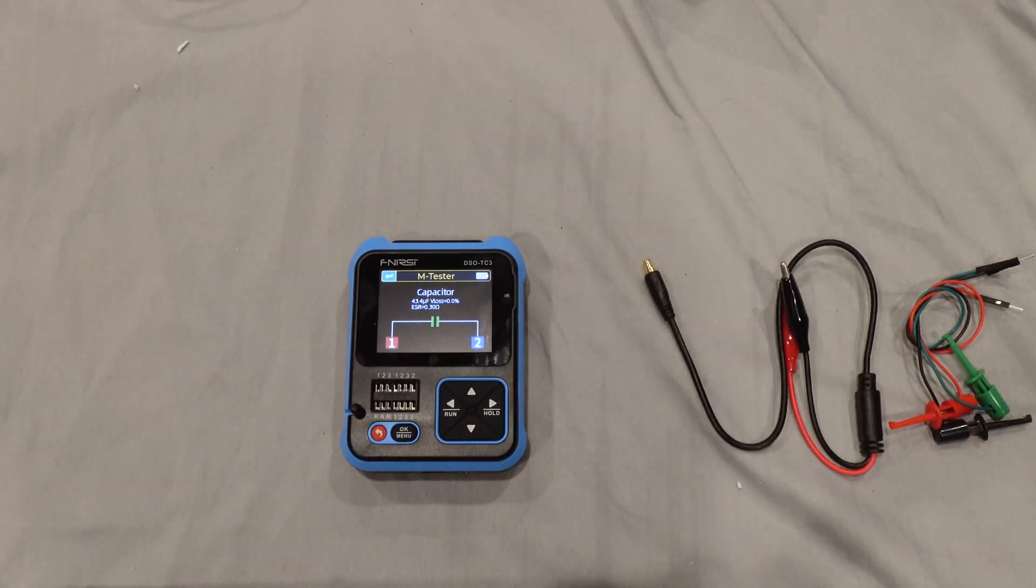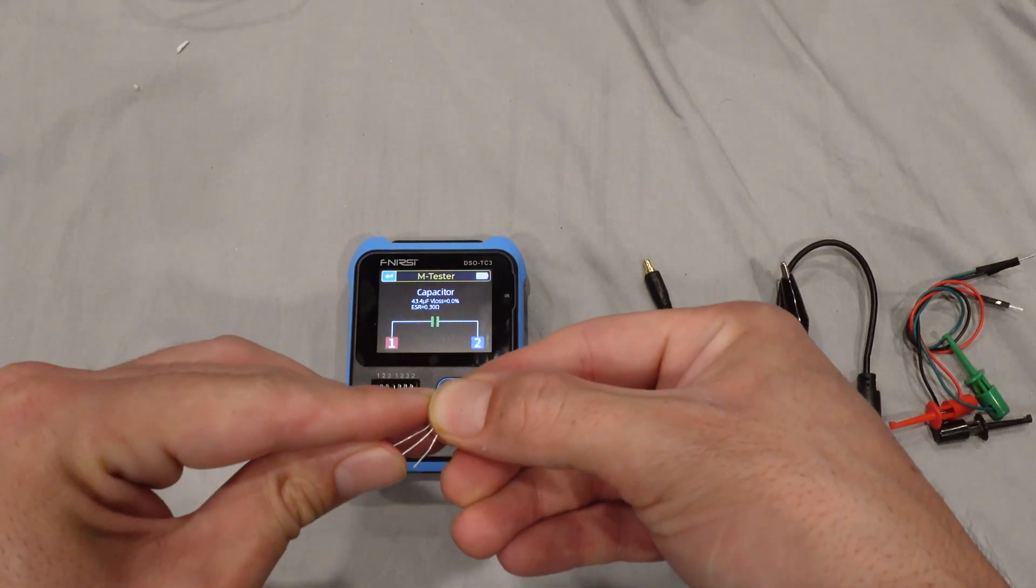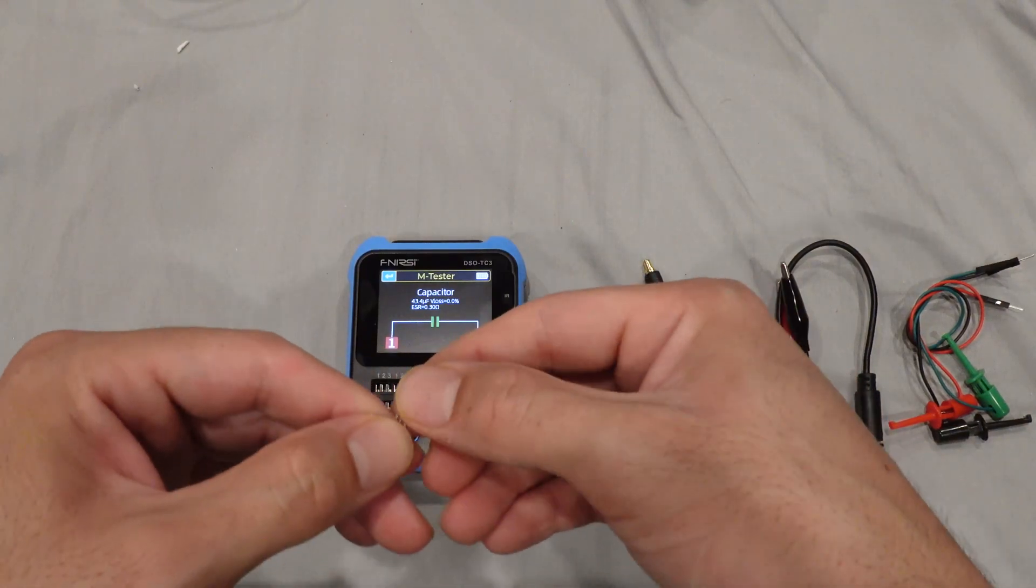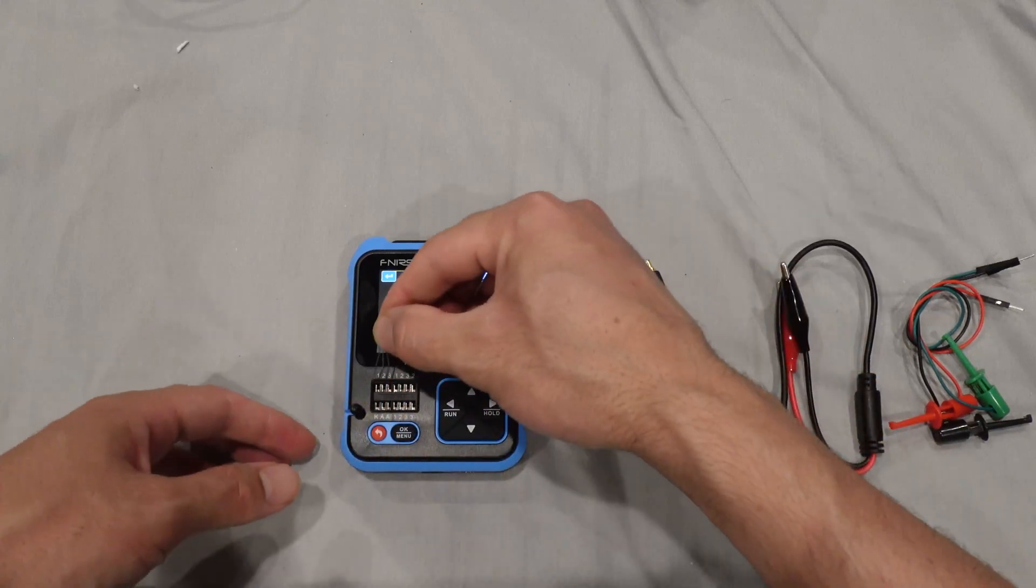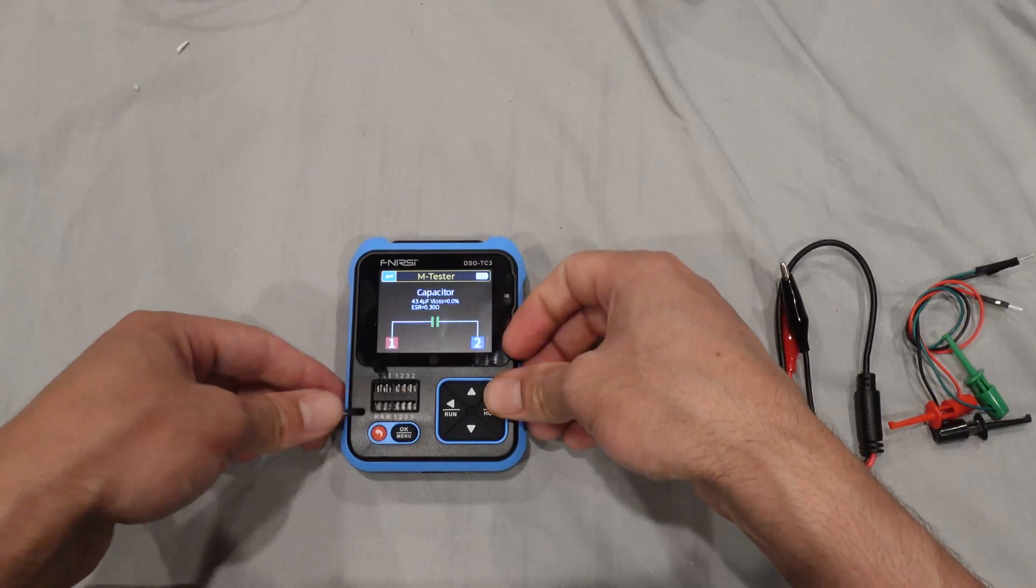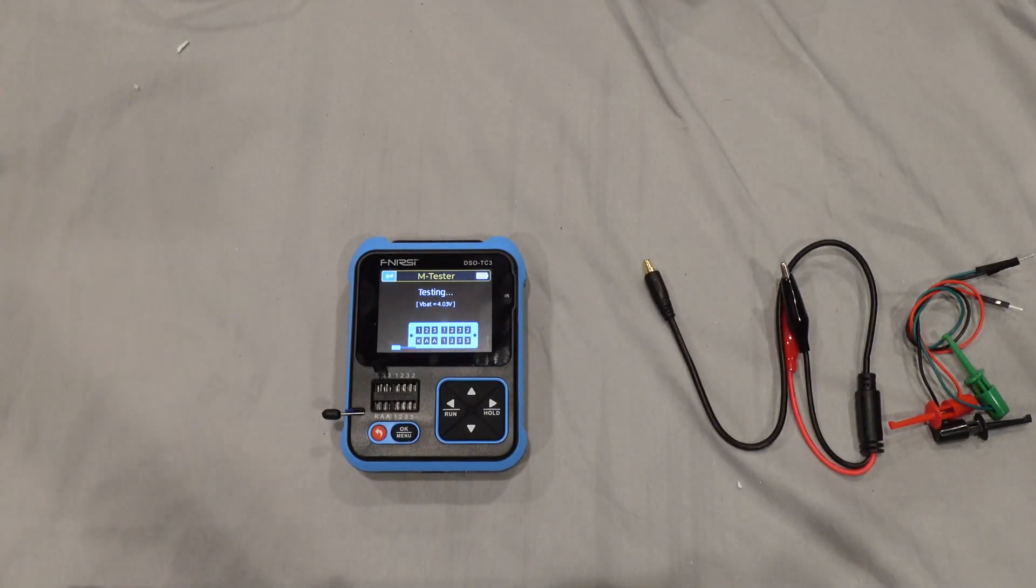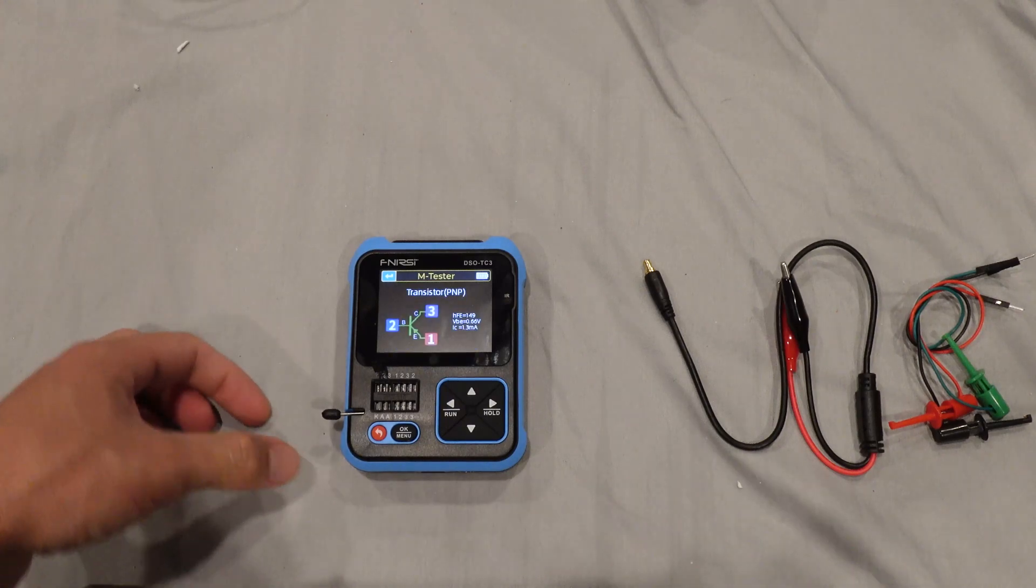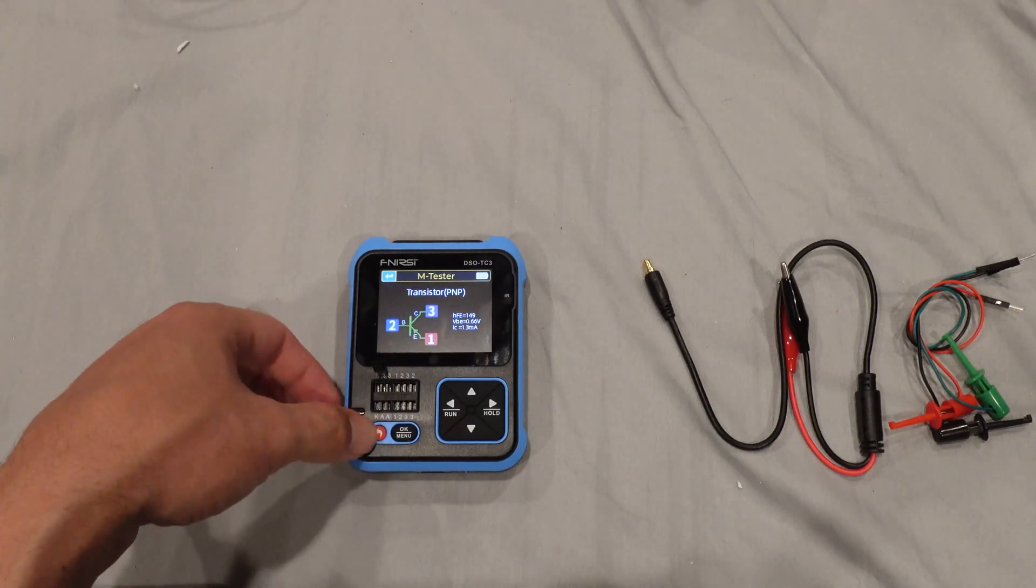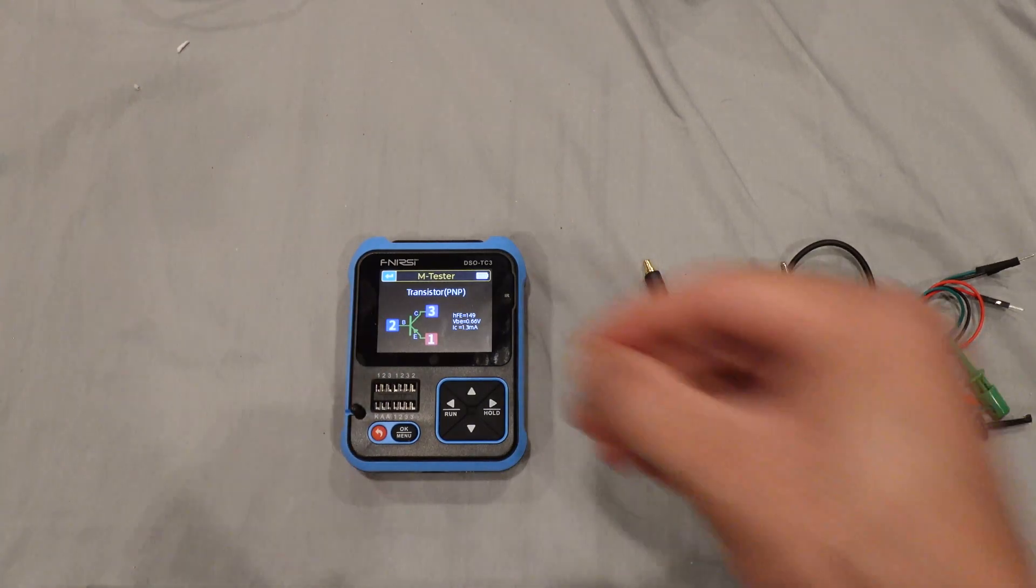Let's see another thing that we can test, obviously these transistors to see if they are NPN or PNP. Yeah, it shows that this one is PNP. That's good. Can also check a resistor.